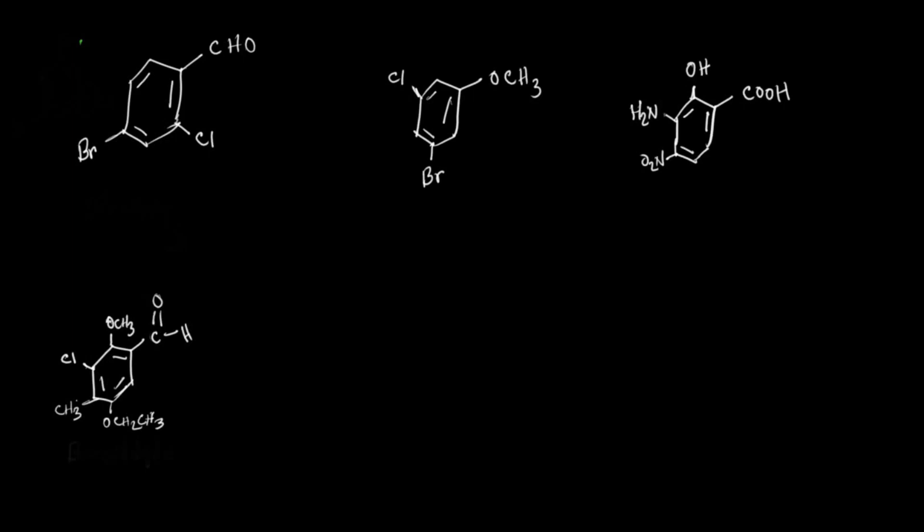Here in the first one, our parent chain is benzaldehyde. You can clearly see that we have our functional group here which is aldehyde, and it's attached with the benzene ring, so our parent group is benzaldehyde. Now we have two substituents: one is chloro and another is bromo. Now we should number the benzene ring.